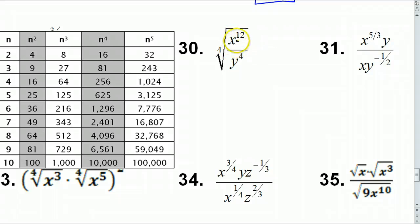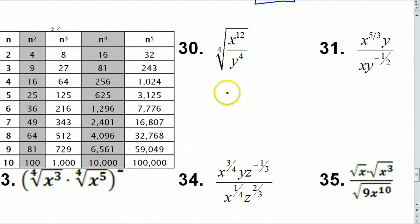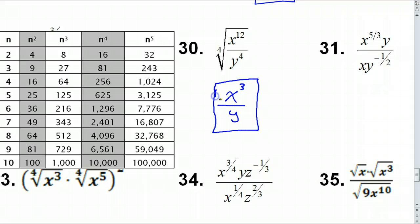Number 30: the way we simplify variables with different kinds of roots is we divide the exponent by the root. 12 and 4 are both divisible by 4, so we go straight to the final answer: X to the 3rd power over Y. 12 divided by 4 is 3, and 4 divided by 4 is 1.